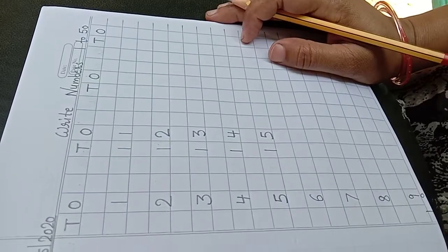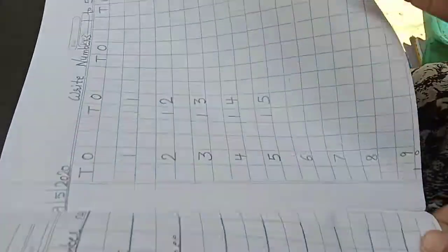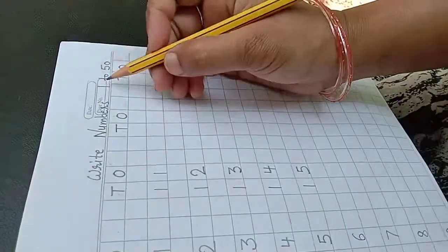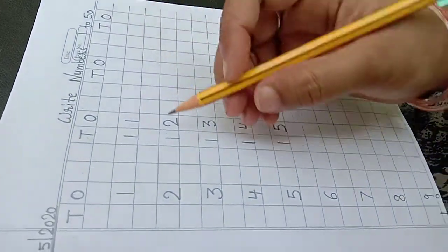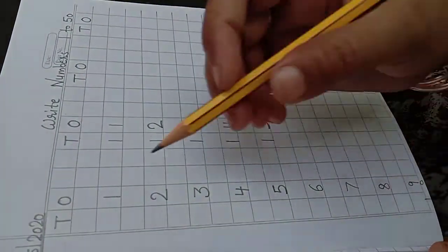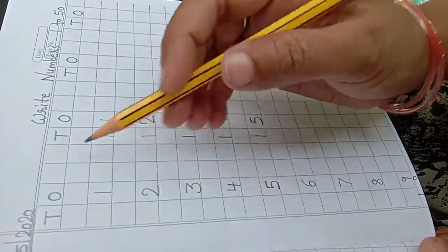Okay, bachho. Isi tarah karna hai aapko. Pura fifty tak karna hai aapko. Aap fifty tak kar lijiye ga. One, two, fifty hamne diya hai. Aur ek cheez ka dhyan rakhiye ga. Jaisi jaisi likhna sikhaya hai. One one box chod ke likhna hai.